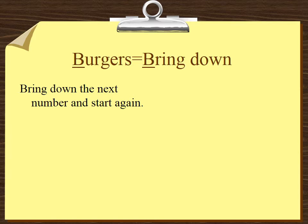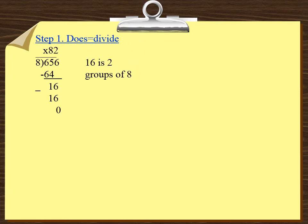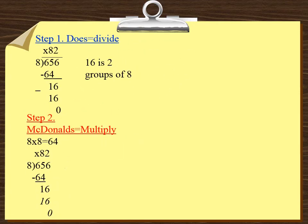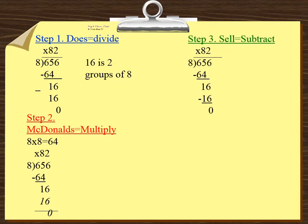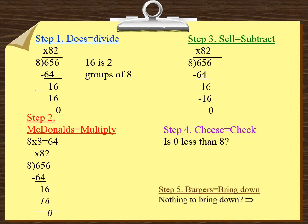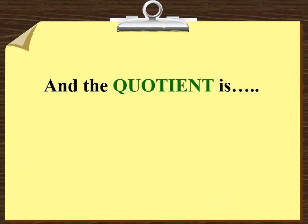Burgers equals bring down. Bring down the next number and start again. So we bring down the 8. These are the steps that we did in this problem. Does equals divide, McDonald's equals multiply, Sell equals subtract, Cheese equals check, and Burgers means bring down. And the quotient is 82.